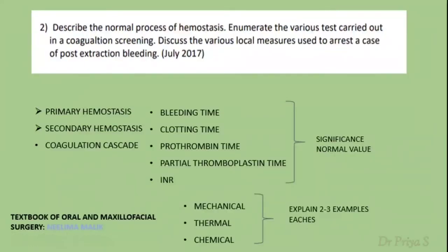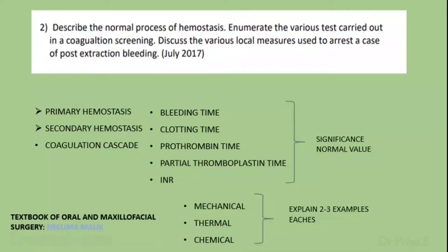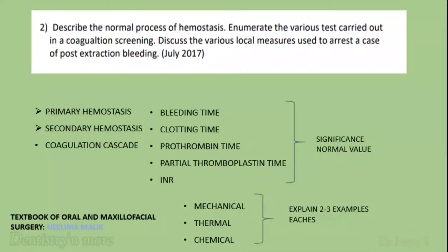The next question has three parts. First, describe the normal process of hemostasis — explain primary hemostasis and the role of platelets, and explain secondary hemostasis under the intrinsic and extrinsic coagulation pathways. Then enumerate the coagulation screening tests: bleeding time, clotting time, prothrombin time, partial thromboplastin time, and INR — write a line on the significance and normal values of each. In the third part, discuss local hemostatic measures to arrest post-extraction bleeding, covering mechanical, thermal, and chemical methods with two or three examples in detail.